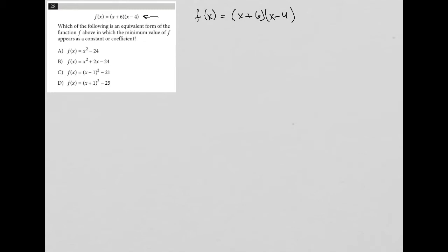I'm going to use FOIL. First times first, I get x squared. Outer times outer, I get minus 4x. Inner times inner, I get plus 6x. And last times last, I get negative 24. So I'm left with x squared plus 2x minus 24.